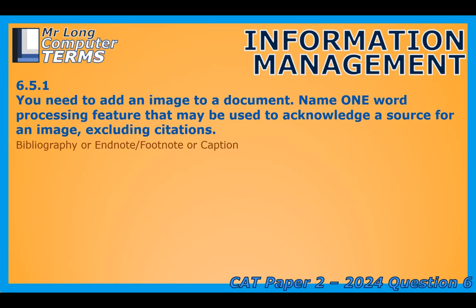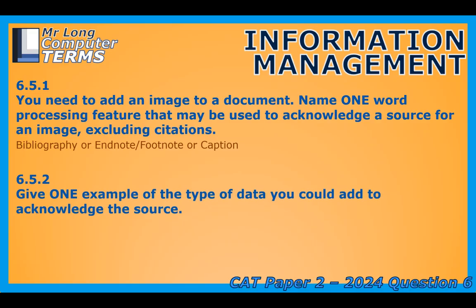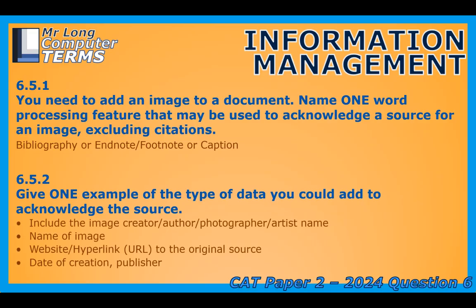Related to that — give an example of the type of data that could be added to acknowledge the source of an image. When using images, we need to give credit where credit is due. Include the image creator if you can find that out — the author, photographer, or artist's name. If the image has a name, mention that. You also want to mention where you got the image from, so include the hyperlink or the website of the original source. You can also add the date of creation or the publisher if that information is available.